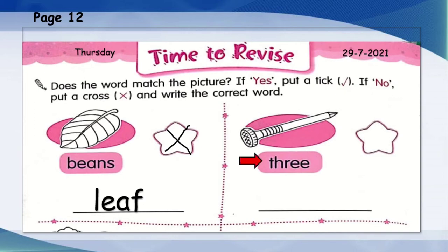Now let's see the next picture. Three. So does that match the picture given? No. So cross it again. What is the correct word for the picture? Yes, it's a nail. N-A-I-L. Very good, students.